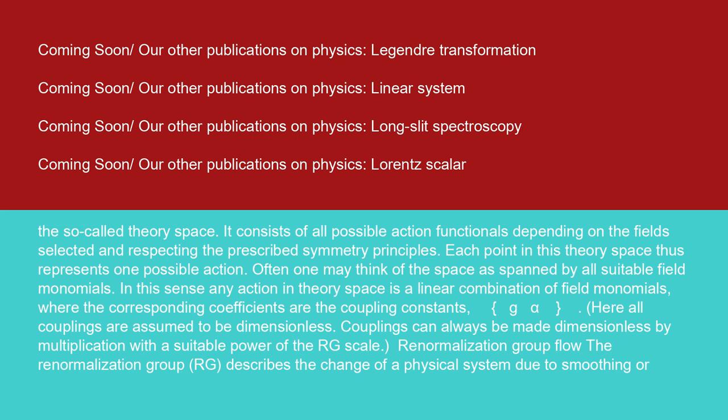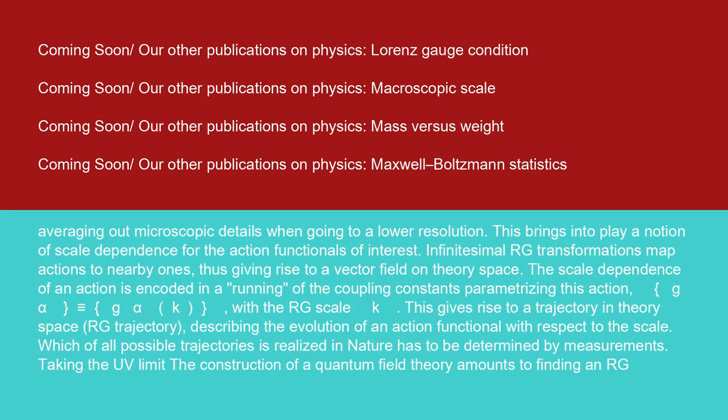Renormalization group flow: the renormalization group RG describes the change of a physical system due to smoothing or averaging out microscopic details when going to a lower resolution. This brings into play a notion of scale dependence for the action functionals of interest. Infinitesimal RG transformations map actions to nearby ones, thus giving rise to a vector field on theory space. The scale dependence of an action is encoded in a running of the coupling constants parametrizing this action. G_α is identical to G_α(k) with the RG scale k. This gives rise to a trajectory in theory space, RG trajectory, describing the evolution of an action functional with respect to the scale. Which of all possible trajectories is realized in nature has to be determined by measurements.